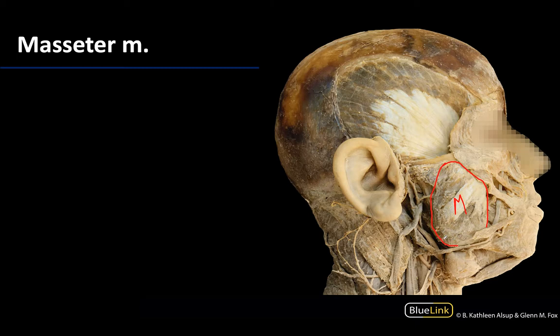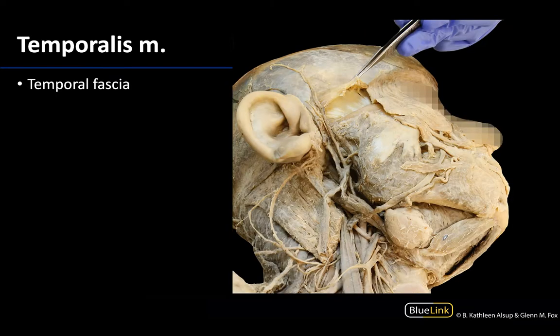The masseter muscle is typically one of the easier muscles to locate in the head and neck. Moving to the temporalis region, which will be up here — we're looking at an inferior lateral view. In order to see the temporalis muscle well, you have to remove the temporal fascia, which is what is occurring right here.